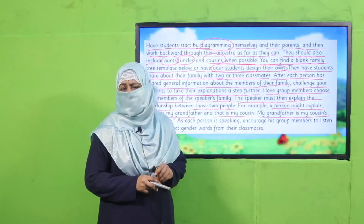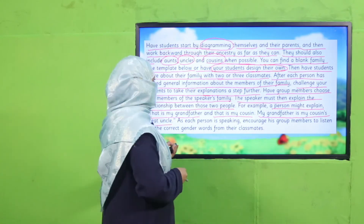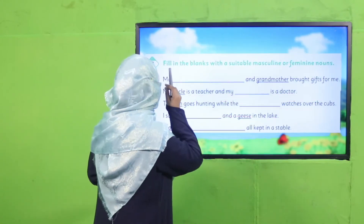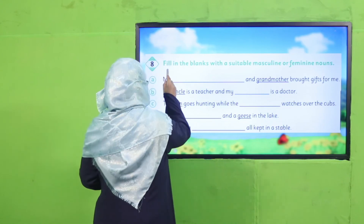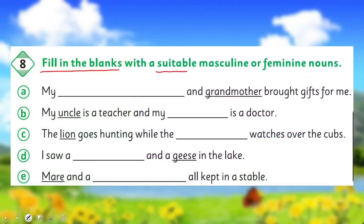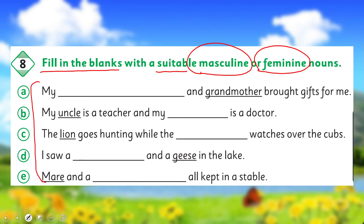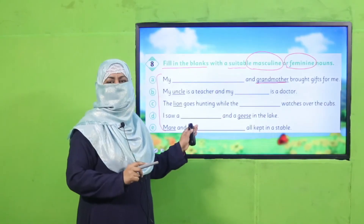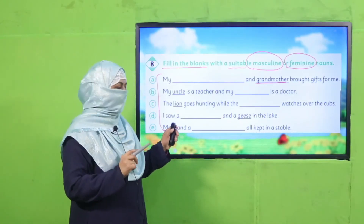Yes, my dear children, are you done? Good job! Now it's time to practice from your book. Fill in the blanks with the suitable masculine or feminine noun. The gender nouns have been underlined — you have to fill in the opposite gender. Pause the video, complete this exercise in your book, and come back.